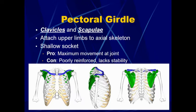The positive about having a shallow socket is that it allows maximum movement at the shoulder joint. If you move your upper arm at the shoulder, you can move it in almost any direction because of the shallow socket. However, there is also a negative with the shallow socket — it is poorly reinforced and it lacks stability, meaning it is more likely to dislocate.